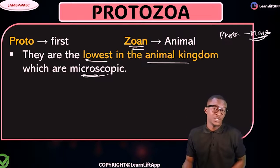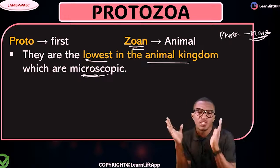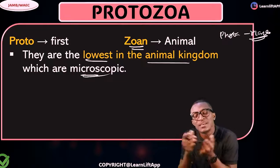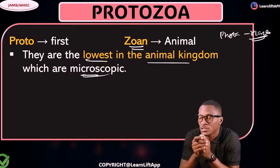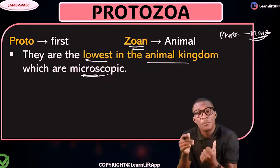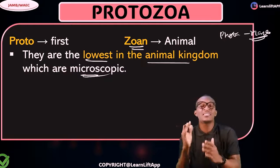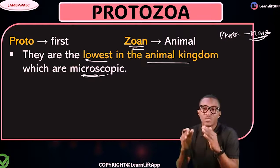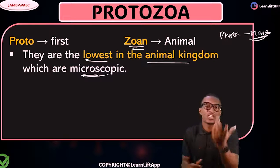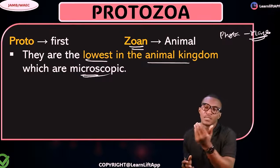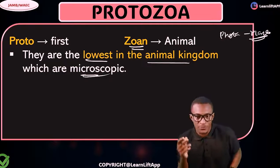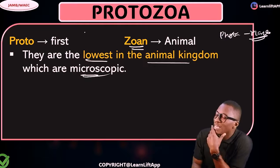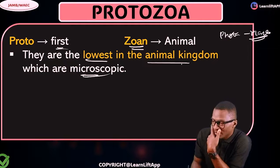Let me ask a simple question: are protozoa prokaryotic or eukaryotic? From our previous classification, we know that everything about animals is eukaryotic — they have a true nucleus. Under eukaryotes, we have the Protista, Mycota, Fungi, Plantae, and Animalia. These guys are the first animals.